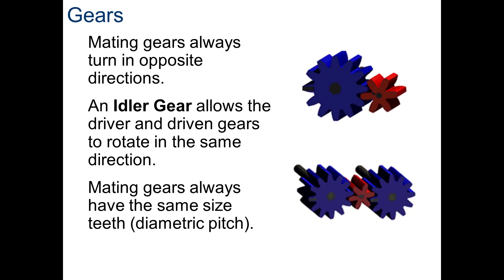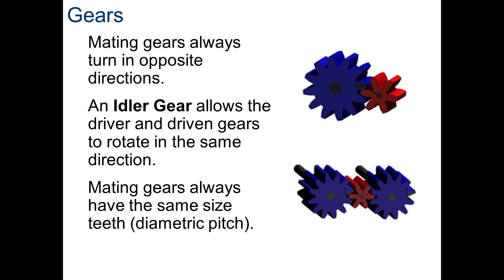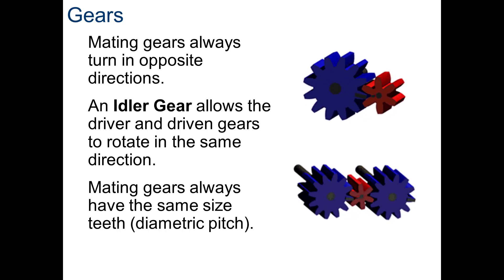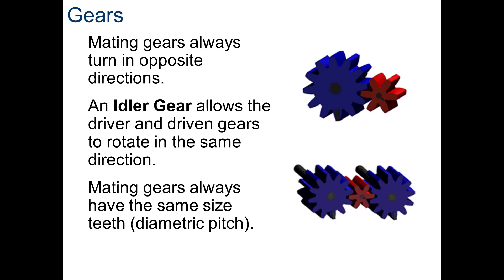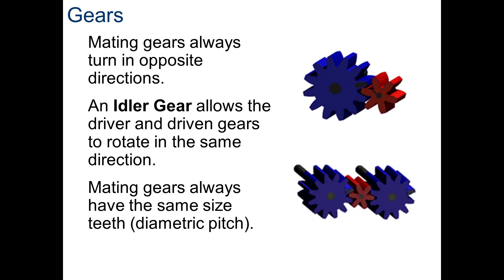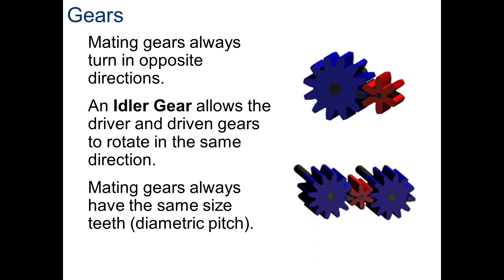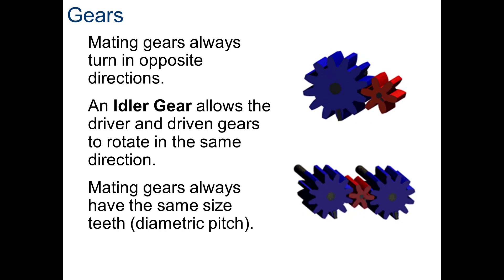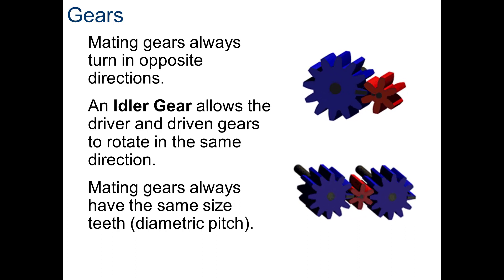When you deal with gears, when two gears mate, they always turn in the opposite direction, such as the two gears in the top right-hand corner of the screen. If we need our input and output gears to rotate in the same direction, we can add what we call an idler gear in between the two gears.